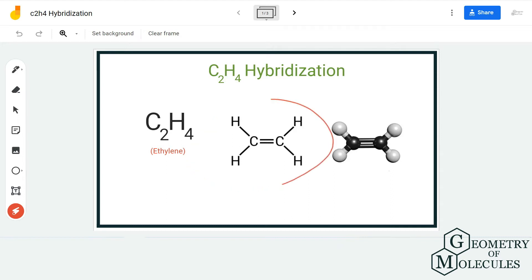If you look at this Lewis structure here, each carbon atom is forming three bonds with three atoms: two hydrogen atoms and one carbon atom. It is forming a double bond with the carbon atom and two single bonds with two hydrogen atoms.